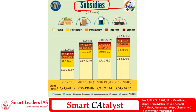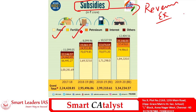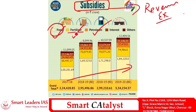Now let's look at the subsidies, which are a component of revenue expenditure. The government of India, being a welfare state, provides various subsidies to its citizens. The major subsidies include food subsidy, fertilizer subsidy, and petroleum subsidy. The food subsidy has been increasing for the past three years. The fertilizer subsidy has also been increasing as the government focuses on doubling farmers' income by 2022. The petroleum subsidy is the smallest among the three and has also seen an increasing trend in the past three years.